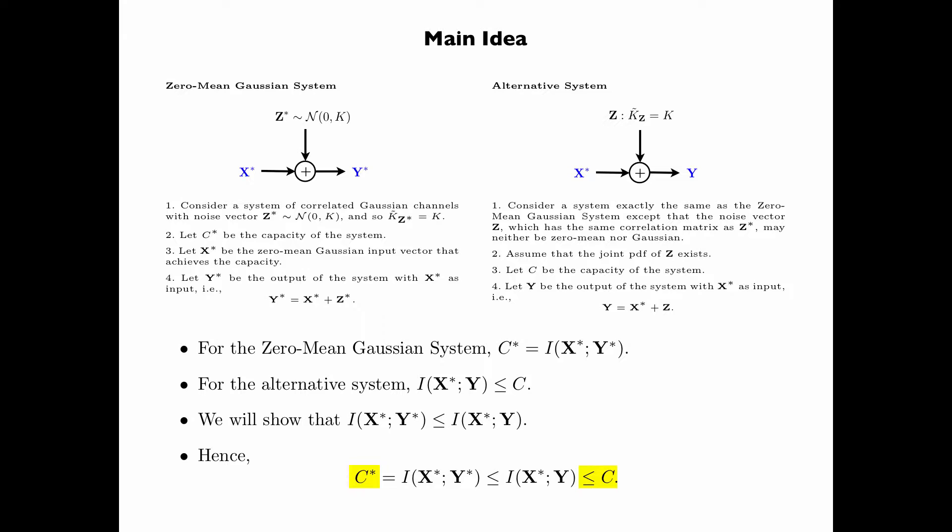And so we obtain C star is less than or equal to C. That is, when the correlation matrix of the noise vector is fixed, the zero mean Gaussian noise always gives the minimum capacity.